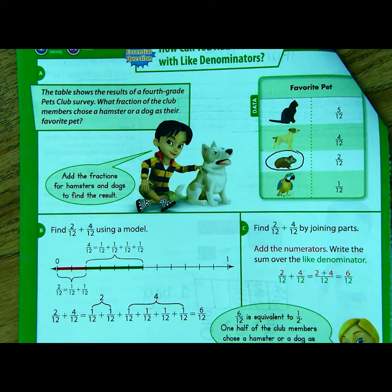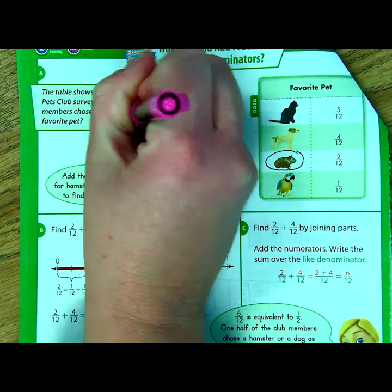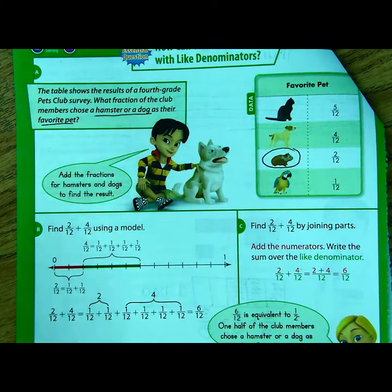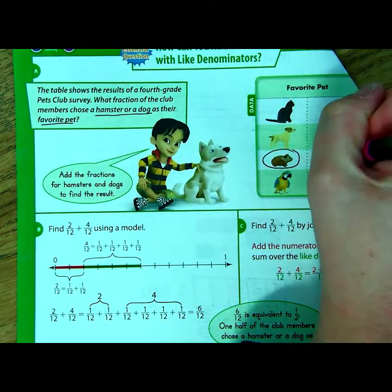So we have cats, dogs, hamsters, and birds. The question is, what fraction of the club members chose a hamster or a dog as their favorite pet? So it looks like we are looking at these two fractions right here.